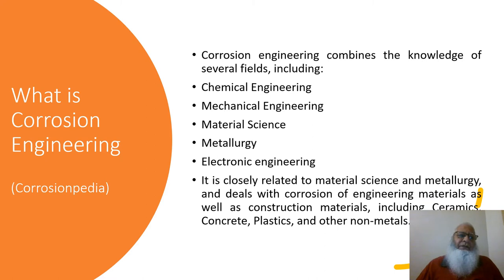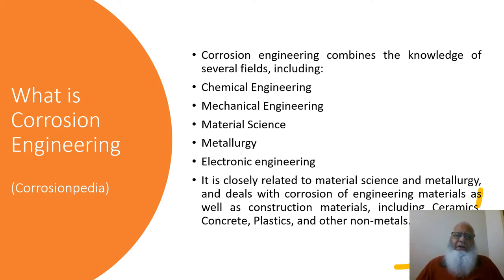This slide shows the definition of corrosion engineering taken from Corrosionpedia. According to Corrosionpedia, corrosion engineering combines the knowledge of several fields, including chemical engineering, mechanical engineering, material science, metallurgy, and electronic engineering, and deals with the corrosion of engineering materials as well as construction materials, ceramics, concrete, plastics, and other non-metallic and other types of materials.